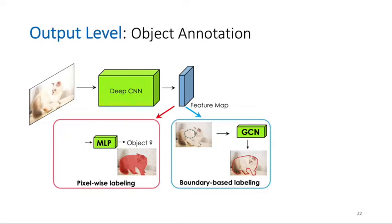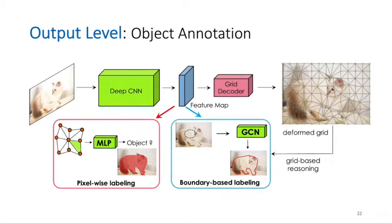And since the pixels that are inside the grid have similar colors or semantics, predicting the label for every grid cell is more efficient and can pose regularizations to the prediction.